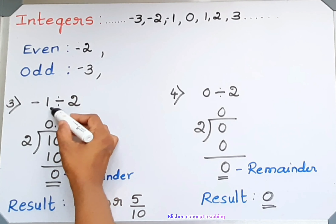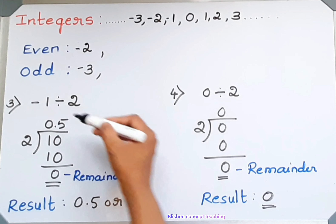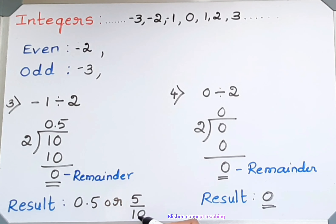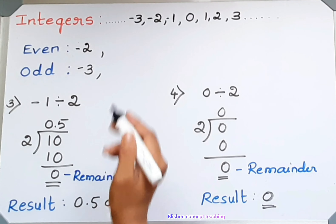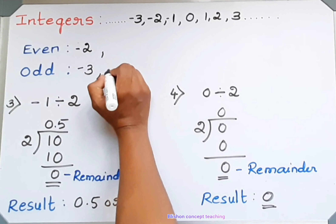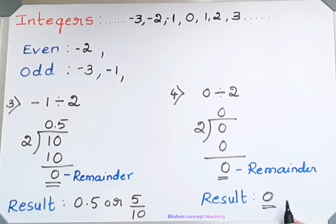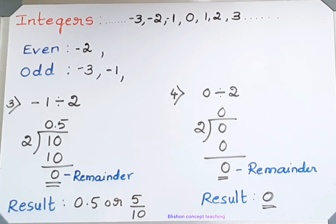I have divided minus 1 by 2. The remainder is 0 here, but the result is in fraction form, so it is not an even number — it is an odd number. For 0, the remainder is 0 and the result is in the form of an integer, so 0 is an even number.